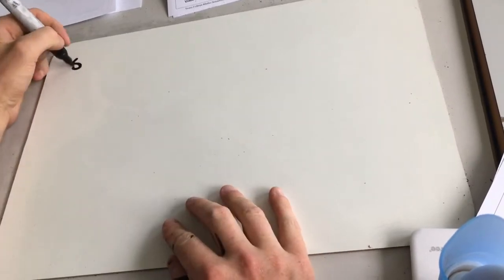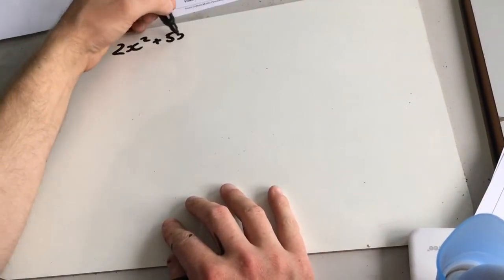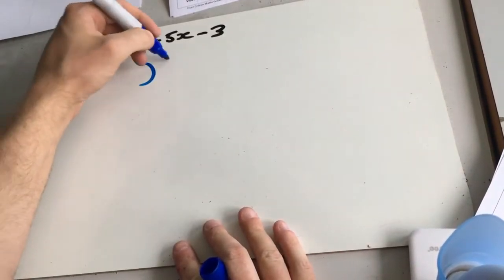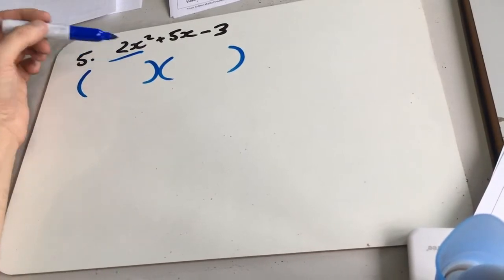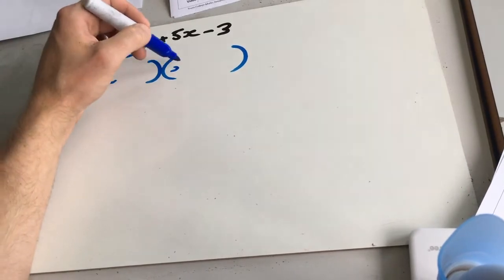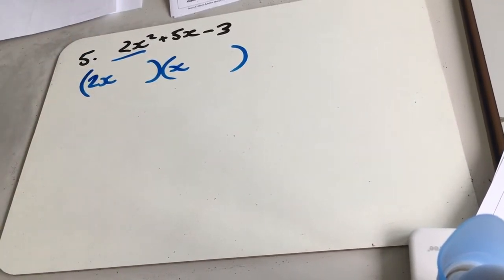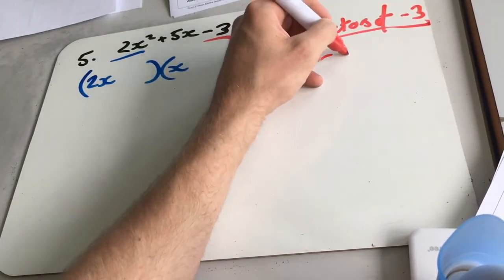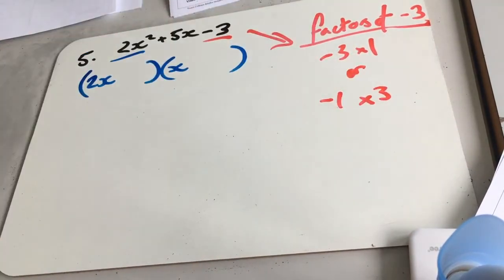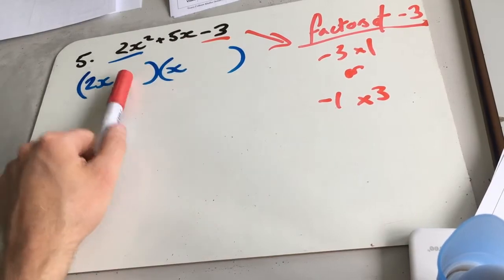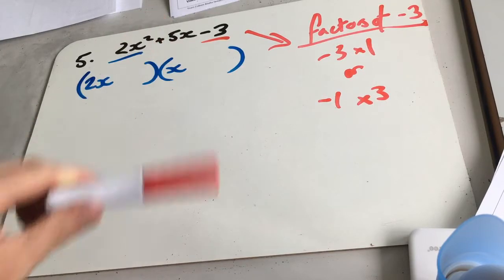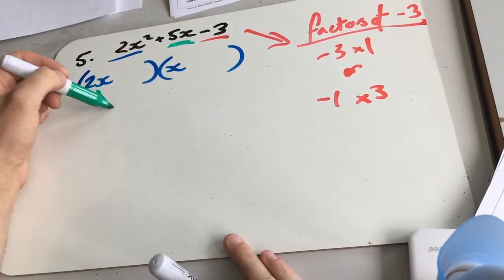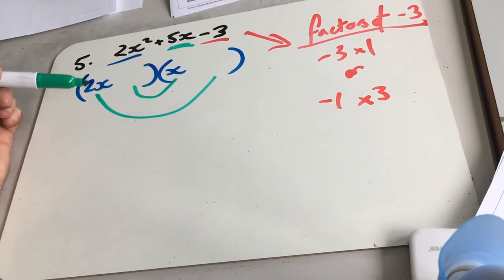Question 5 is a little bit harder: 2x squared plus 5x minus 3. We've got to work out what goes in the brackets. First, we need a 2x somewhere — one bracket has a 2x and the other has an x. We still need two numbers that multiply to give 3, so factors of minus 3: either minus 3 times 1, or minus 1 times 3. Now we need to work out where 1 and 3 go and get the signs right. It helps to think about where the 5x is going to come from — 2x times one number plus x times the other number.